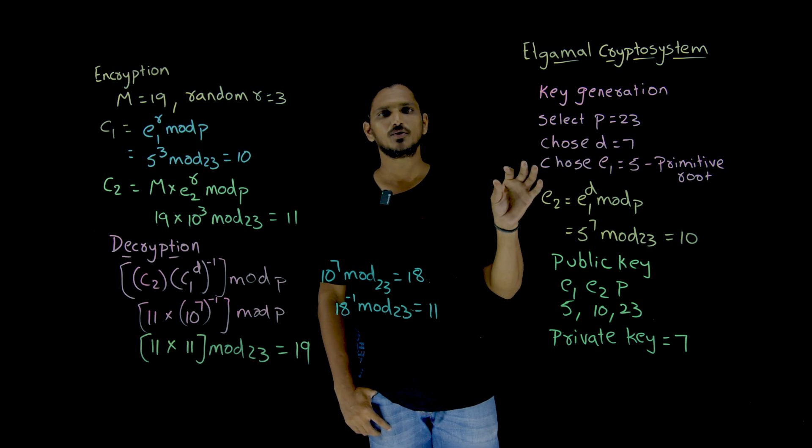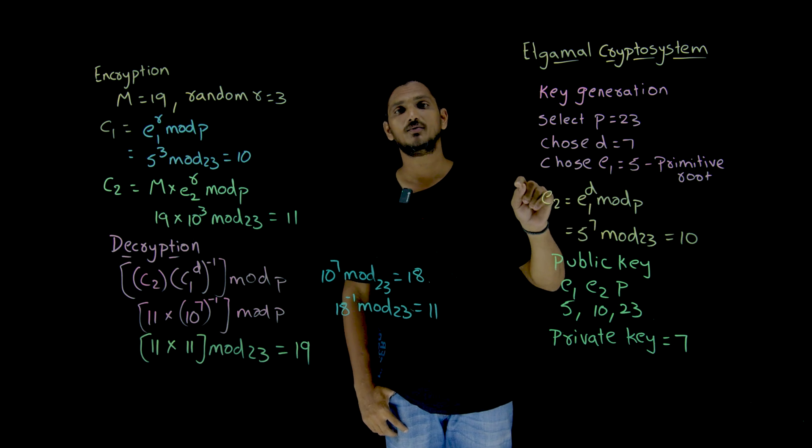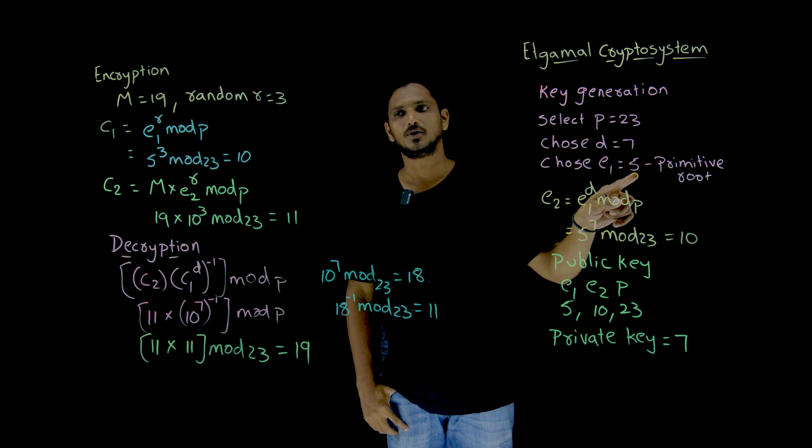How to identify primitive roots was discussed in our previous class. 5 is the primitive root.